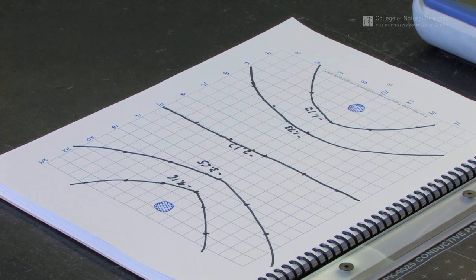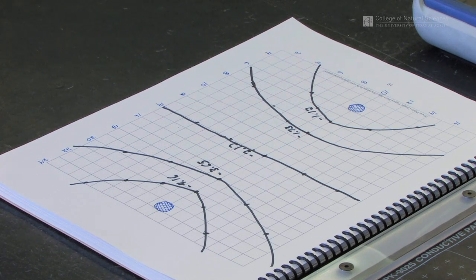When you're finished, you should have a contour plot that has at least five different lines on it and gives you a good representation of what the equipotential contours look like.